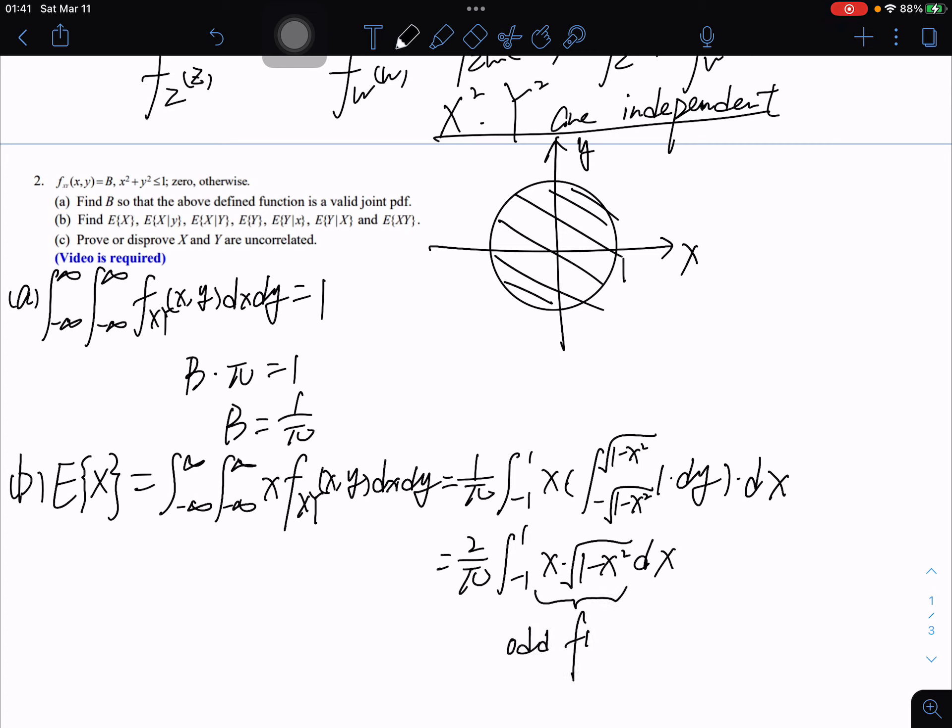So the result of the whole one is zero. Okay, then it's easy to get that E[X|Y] equals zero.